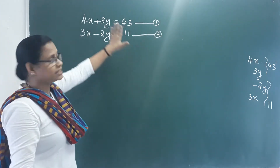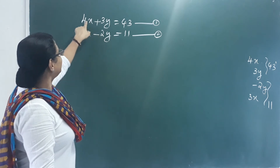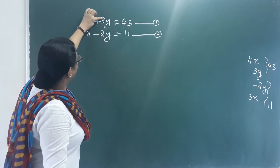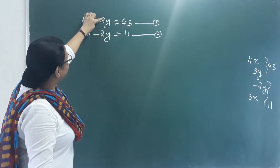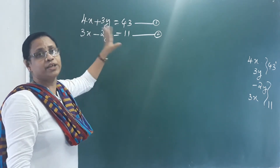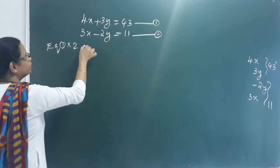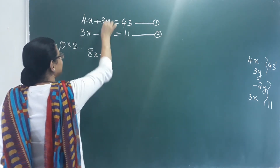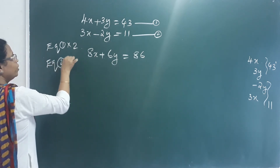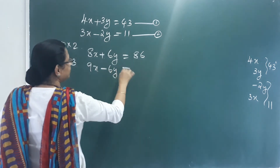The coefficients are different. We need to make one coefficient equal by multiplying. For y, we multiply equation 1 by 2 to get 8x plus 6y equals 86. We multiply equation 2 by 3 to get 9x minus 6y equals 33. Now the y coefficients are both 6.